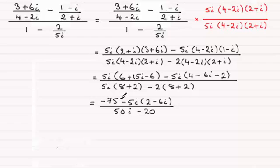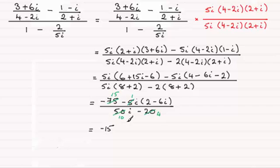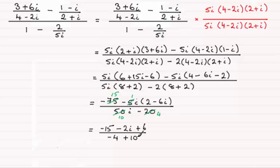I notice that I can divide top and bottom by 5: 5 goes into 75 fifteen times, into the 5 once, into the 50 ten times, and into the 20 four times. Cleaning this up further, we've got minus 15, then expanding the bracket: minus i × 2 = minus 2i, and minus i × minus 6i = plus 6. That gives minus 21 minus 2i, divided by 10i minus 4, which I'll rearrange to minus 4 plus 10i.